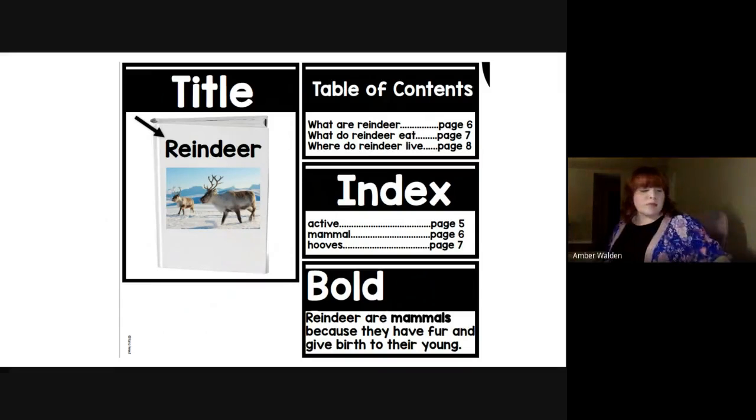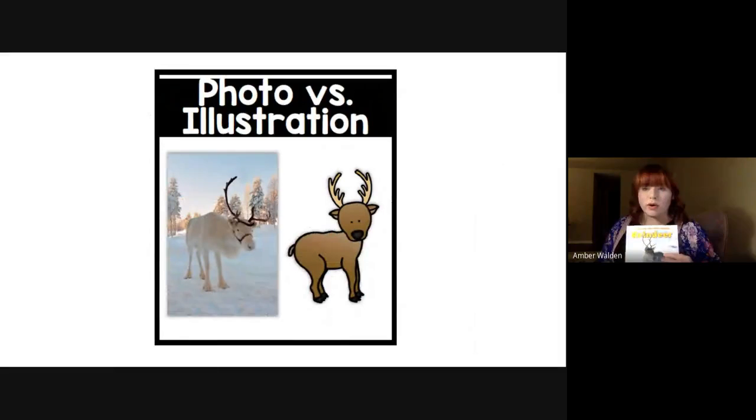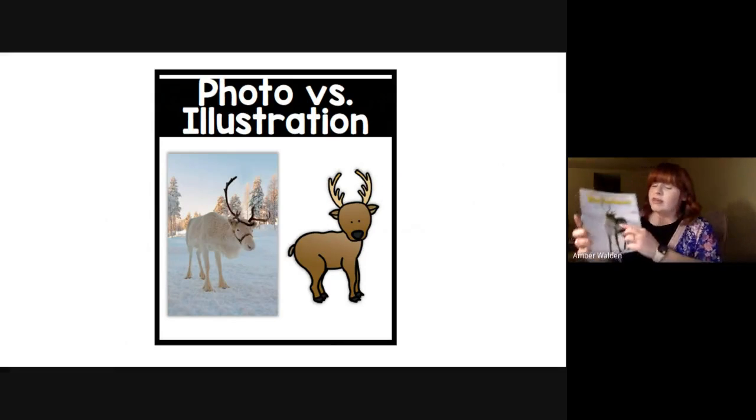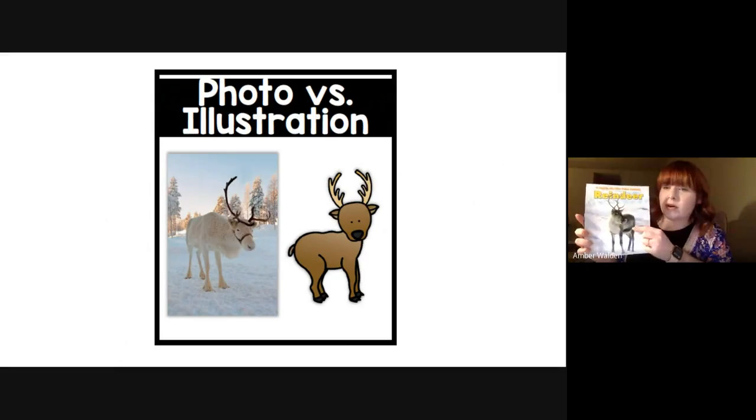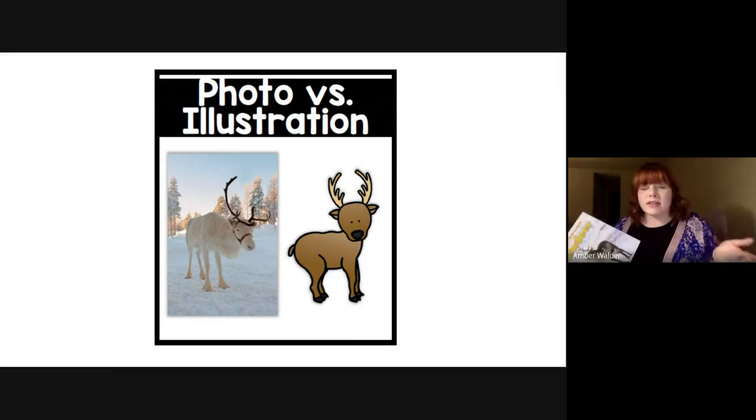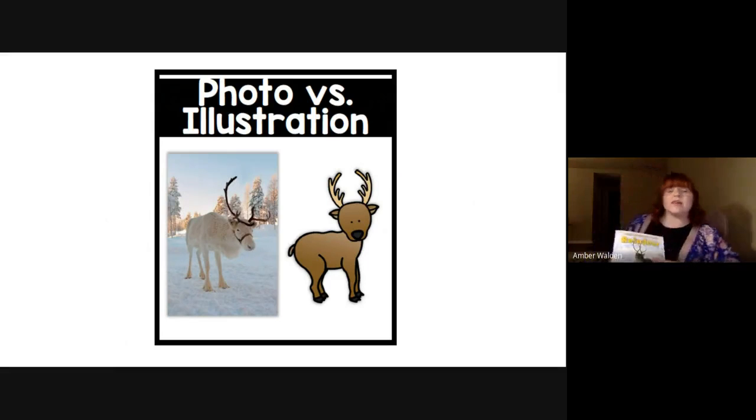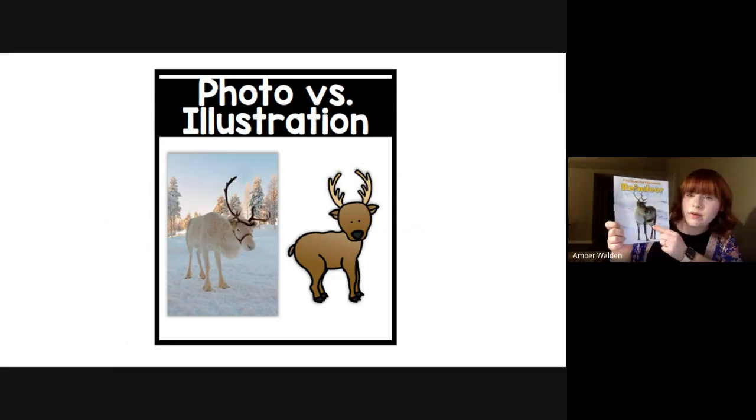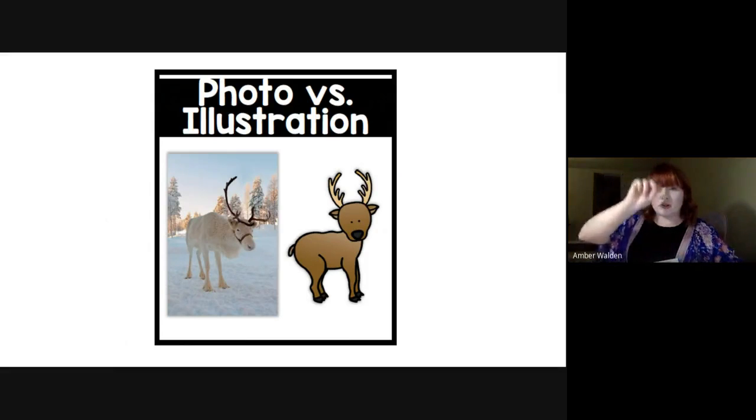So those words are important. When they're a darker color of black, they're important. So this says photo versus illustration. This is a photo. A photo is a real picture of something real. An illustration is something that has been drawn, just like we illustrate pictures in our activities. So we have a photo and an illustration. So an illustration is drawn and a photo is real.